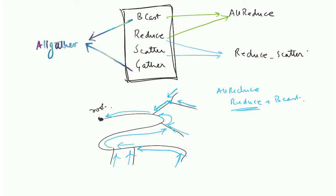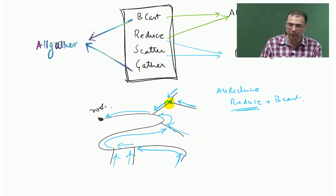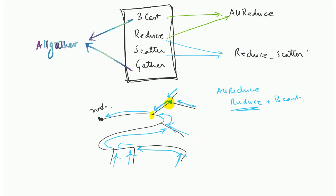Each processor must add up the elements it receives. For example, with MPI_SUM, it adds up both values and forwards that summed value rather than forwarding two separate values. Traversal is bottom-up: a node adds up the two values from its children and forwards the result upward, continuing until the root has the fully reduced value.